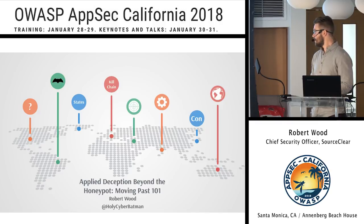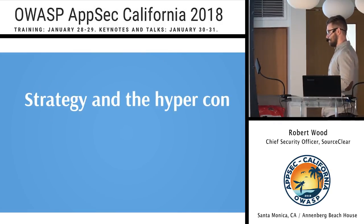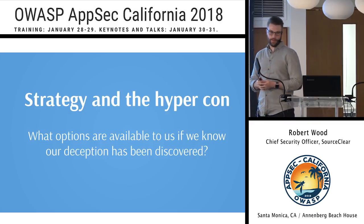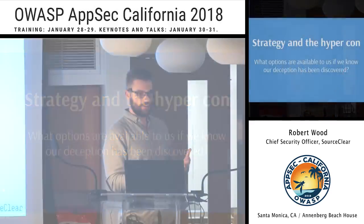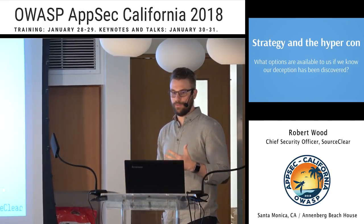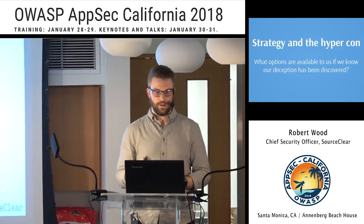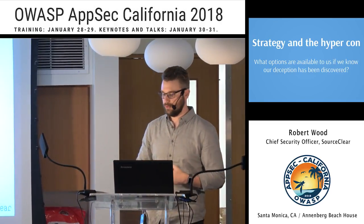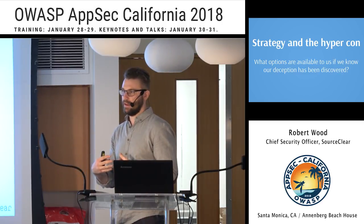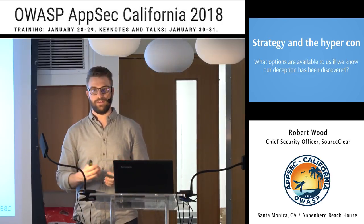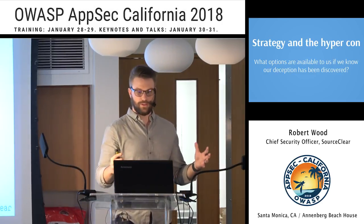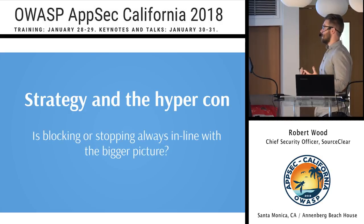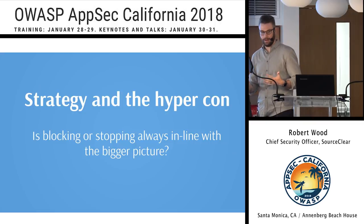Wrapping up, a couple of thought-provoking questions. Pertinent to your strategy: what options are available to us if we know our deception has been discovered? We may want to continue on as we were and rely on other security controls. We may want to take it down, or leave it up and deploy other deception controls around it to increase the sphere of resiliency. The answer is that blocking or stopping is not always in line with the bigger picture you may be striving towards — but it's worth stopping and asking yourself, because your tools on the market will push you down that rabbit hole.